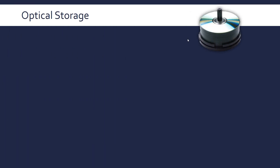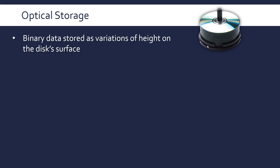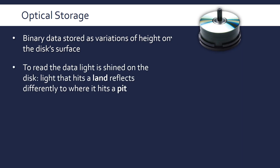Let's take a look at some secondary storage technology. The first is optical storage. All data is stored as binary — either a one or a zero — and optical storage stores it as variations of height on the disk surface. The disk is full of almost invisible pits and lands. A pit is a little divot, and a land is where it's flat. A pit might represent a zero; a land might represent a one in binary.